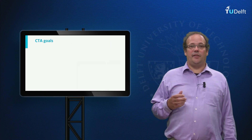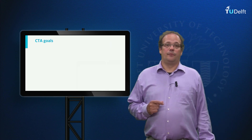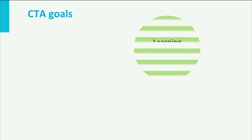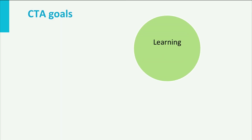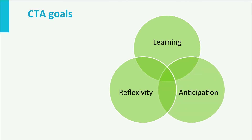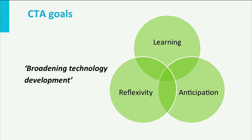CTA has three more specific goals: first, learning about social consequences; second, reflexivity — this implies an awareness of the different actors and their positions in the network; third, anticipation of social consequences. In striving for these goals, CTA also aims at broadening technological development by including more aspects and by involving more stakeholders.